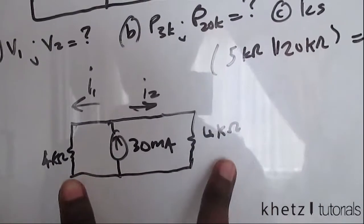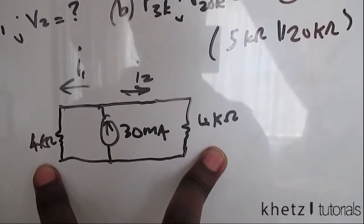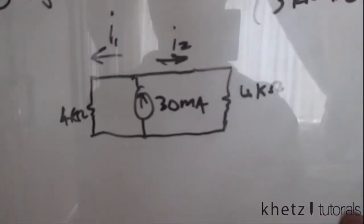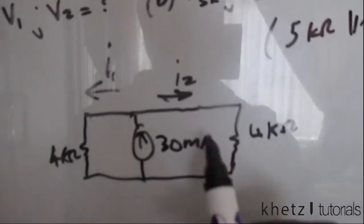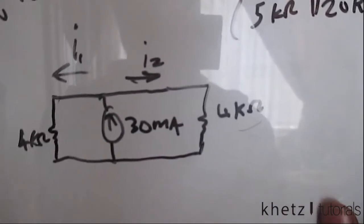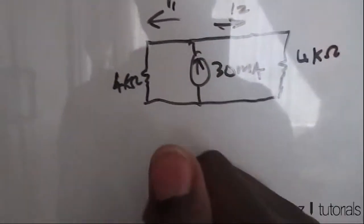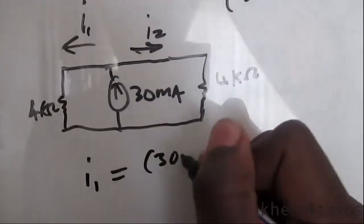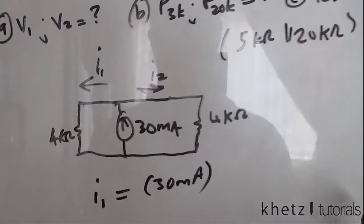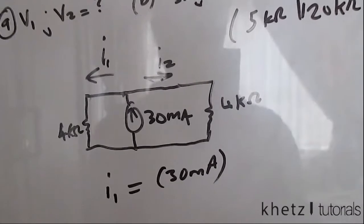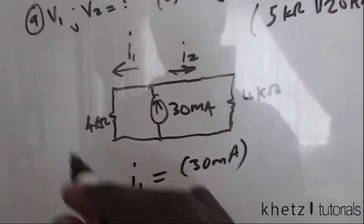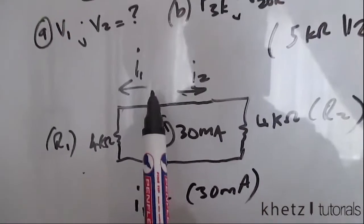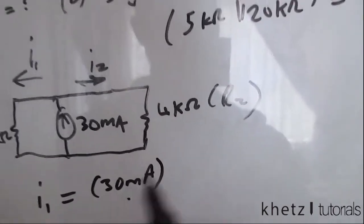These two resistors are equal, which means the current would be divided equally. But if that weren't the case, you'd apply the current division formula. Let's use the formula to confirm: for current division, to find i1 you multiply the current source value by the other resistor in the connection — let's name them R1 and R2. To find i1 across R1, you multiply the current source by R2.